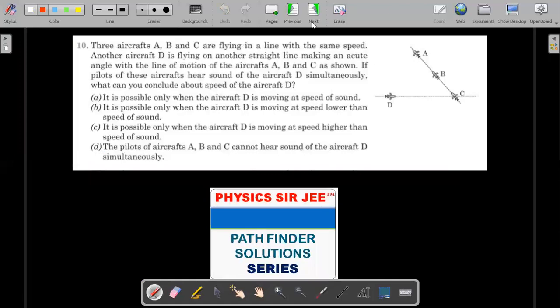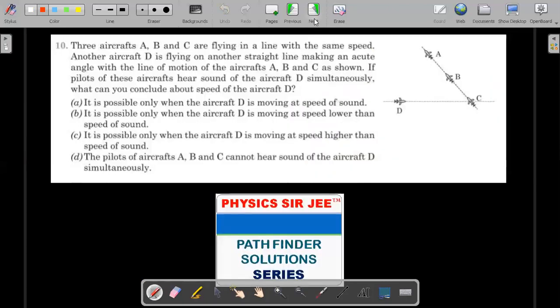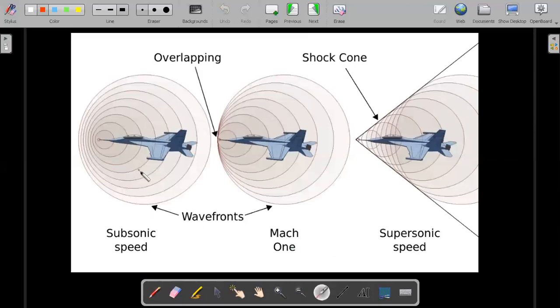For the second question, you have to understand how an object releases wavefronts when it is moving. The source itself is moving this time and we are supposed to see what happens to the wavefronts that are coming out. For a comparison, let me show you a picture of the three different situations. The first one is called subsonic speed. Subsonic speed are the situations where velocity of the source is lesser than the velocity of sound. The wavefronts would be closer in the direction of motion, whereas the wavefronts in the backside would be farther from each other. The wavefronts still would be having a spherical shape, and in this picture you could see them as circular.